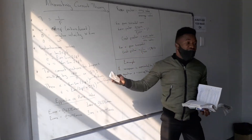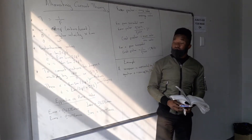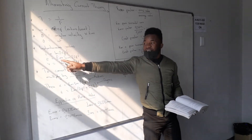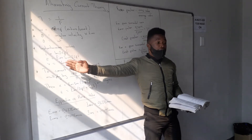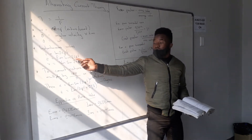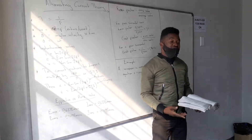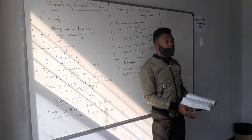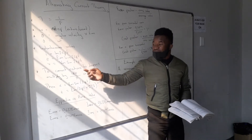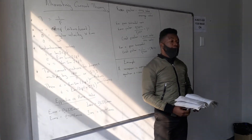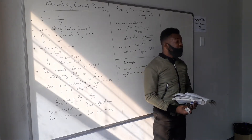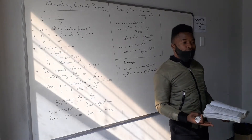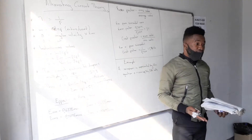The formula changes depending on what's asked. For the instantaneous value of EMF, it will be the maximum EMF multiplied by sin(2πft). For voltage, it's maximum voltage multiplied by sin(2πft). They can ask you to calculate the instantaneous value of current, EMF, or voltage — but it's essentially the same formula.